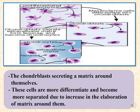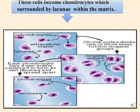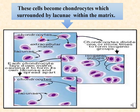The mesenchymal cells transform into chondroblasts, which secrete the matrix around themselves. As the chondroblasts continue differentiating into chondrocytes, the cells become more separated from each other due to the increasing deposition of matrix around them. The chondrocytes are found within lacunae in the matrix, either singly or in isogenous groups.